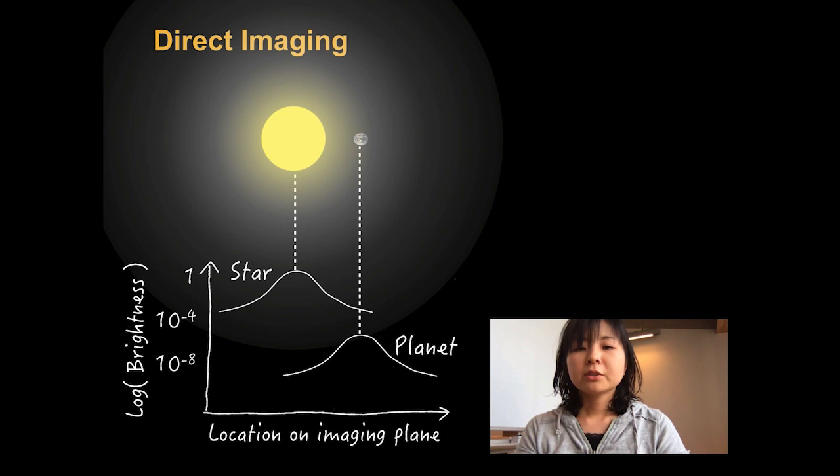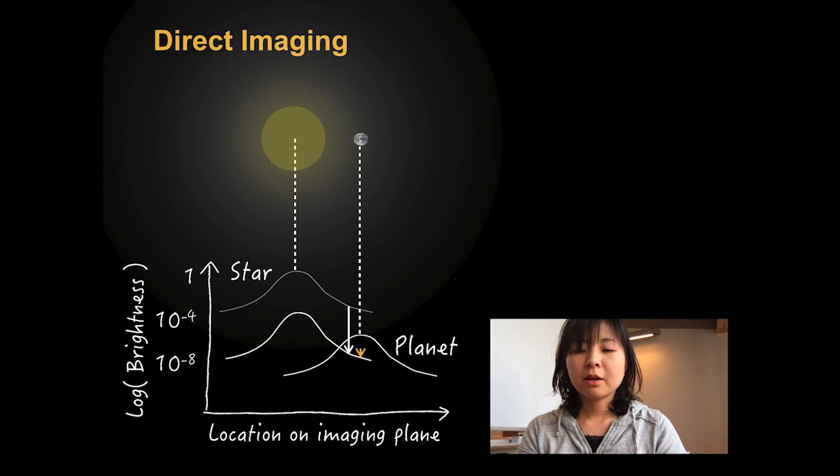In order to identify the planetary signal, we need to suppress the light from the host star using special instruments. The idea of such direct imaging observations of Earth-like planets dates back to the 1990s, but the starlight suppression is technically challenging.